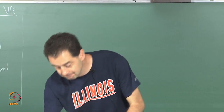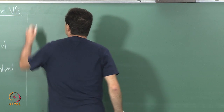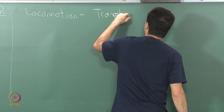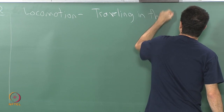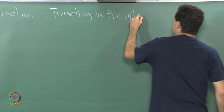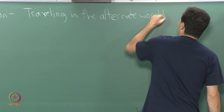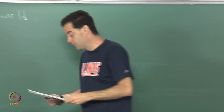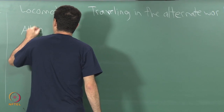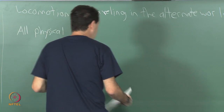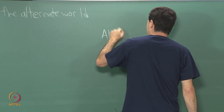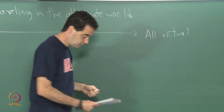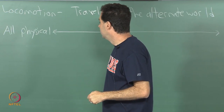Let us go into locomotion, which I will call 'traveling' in this alternate world that we are making — could be virtual, could be some kind of capture of the real world. To understand locomotion I think we should make two different extremes and reason about them. One I will call 'all physical' and the other extreme I will call 'all virtual,' and then we will have a spectrum between them.